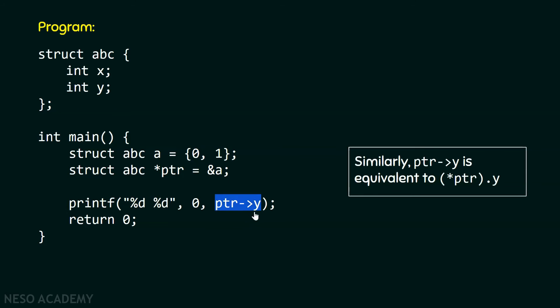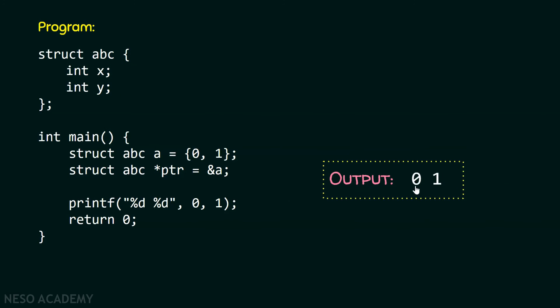Similarly, ptr->y can be replaced by (*ptr).y, which finally becomes a.y. And a.y can be replaced by one. So, the output of this program is zero and one.